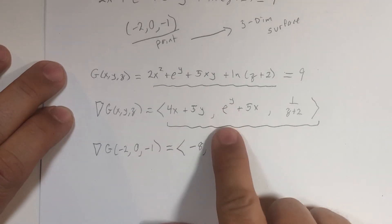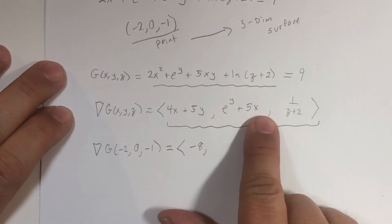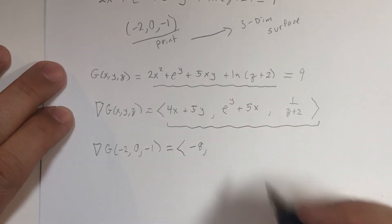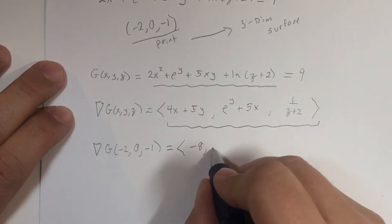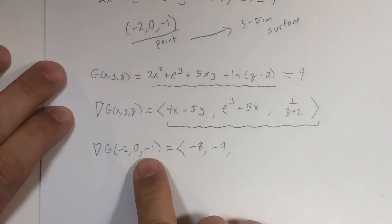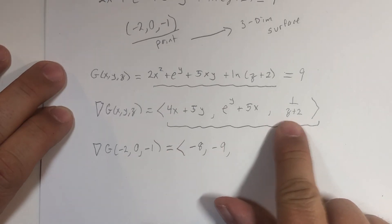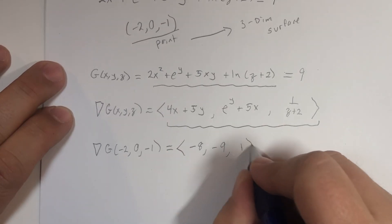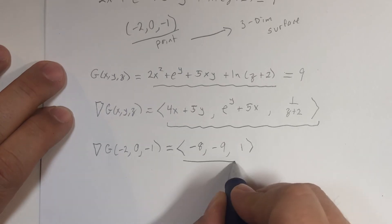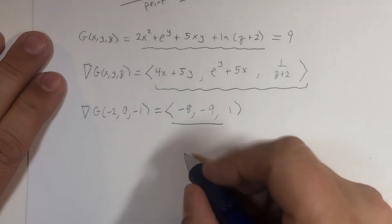e^0 is 1, 5 times -2 is -10, 1 - 10 is -9. If z is -1, you get 1/1, which is 1. So this right here, this vector...